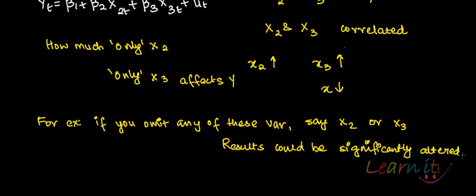You might say, okay fine, if x2 and x3 are correlated, then the best I can do is drop one of them and then run the regression using just one of them. No, the results could be significantly altered.